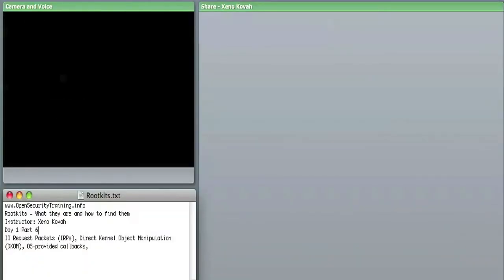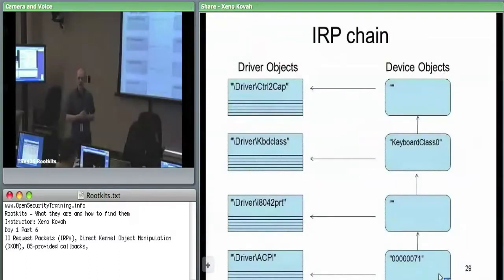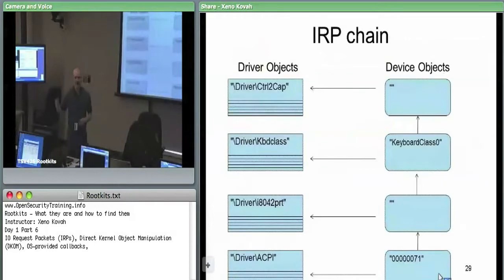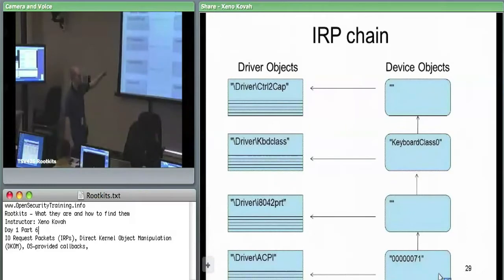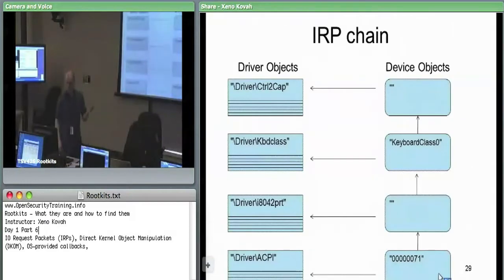One way something could do a rootkit-like interception or man-in-the-middling of the system—to either change data or capture data—is by registering as a filter driver. This involves having a kernel module and getting inserted into the device object chain targeting a particular device object that data will be going towards. In this case, they knew keyboard class zero would have keystroke data going up and down that chain, so they register themselves as an upper filter driver for that.